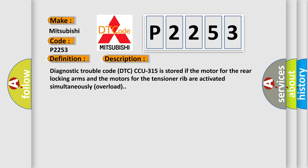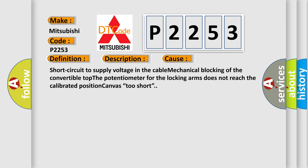This diagnostic error occurs most often in these cases: short circuit to supply voltage in the cable, mechanical blocking of the convertible top, the potentiometer for the locking arms does not reach the calibrated position, or canvas too short.